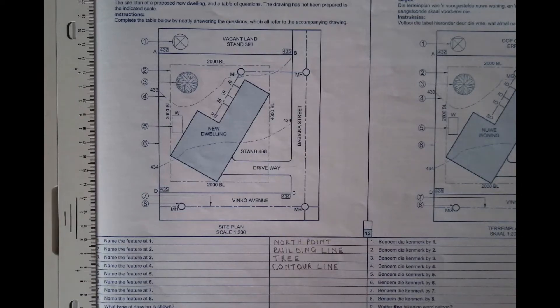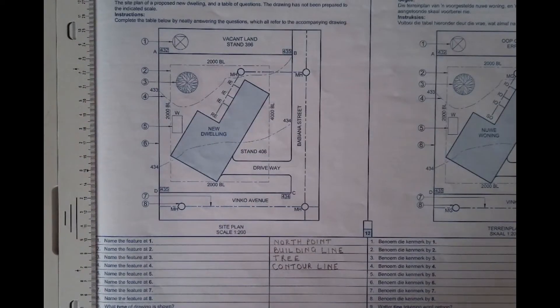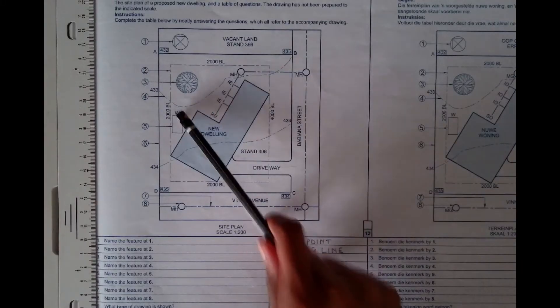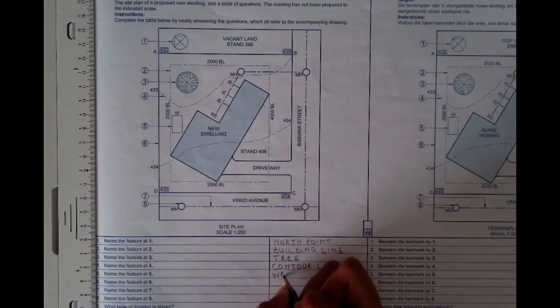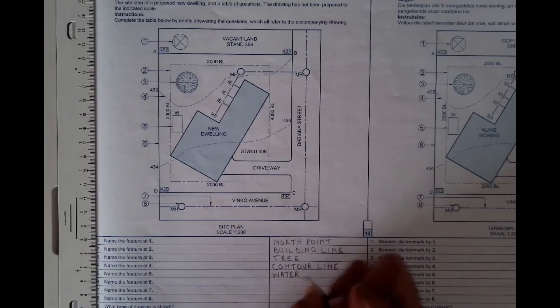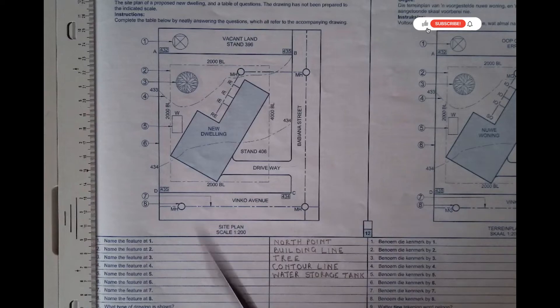Moving forward, name the feature at five. At five, we have this little rectangle there with a W on top of it. That is what we call a water storage tank. So that is your water storage tank. Mostly used, the water is mostly used for plumbing purposes.